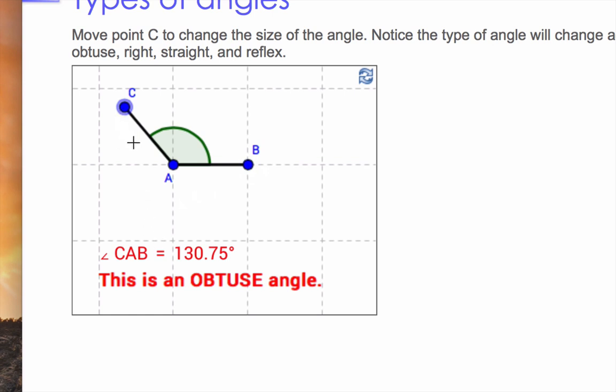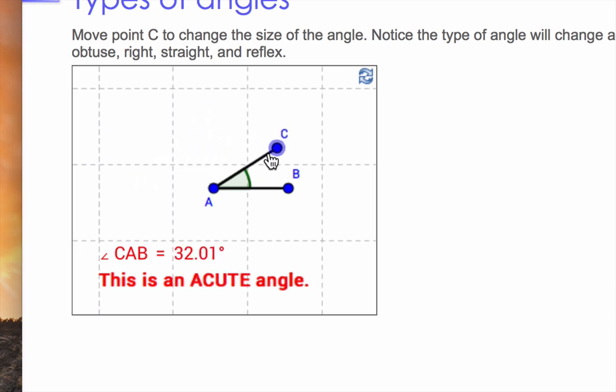angle CAB, or I could call it angle BAC, my choice, as long as the A is in the middle because it's the vertex, the corner. I've got this angle and I can move it around. I can turn it into a tiny little angle like this, or I can turn it into a big angle. I can even go further around. As I'm doing this